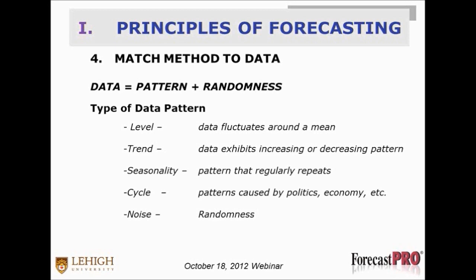The other principle of forecasting is to match method to the data. Remember that all data has pattern in it plus randomness. We can have just a level pattern — say a mature product like table salt that just fluctuates around a mean. We can have trends, seasonality, cycle, and so forth. And we can have layers of patterns, one on top of each other.